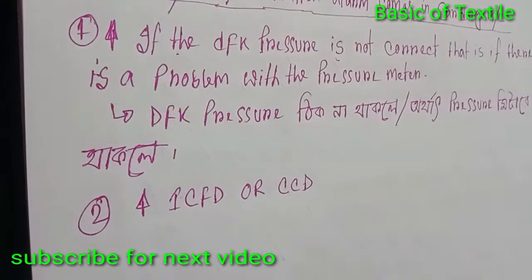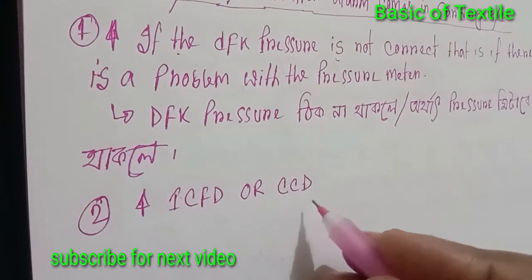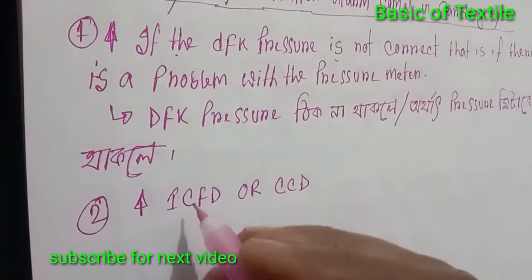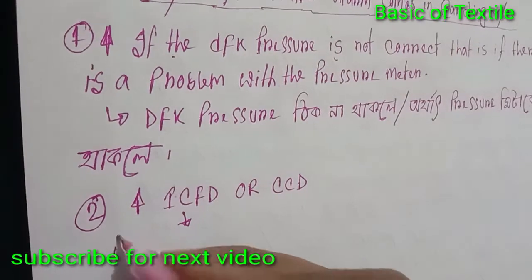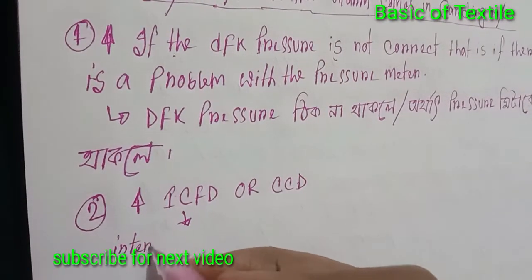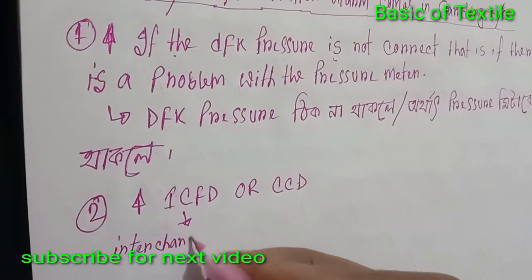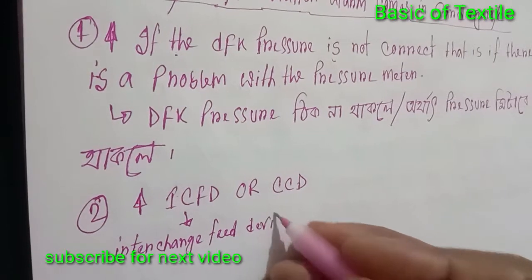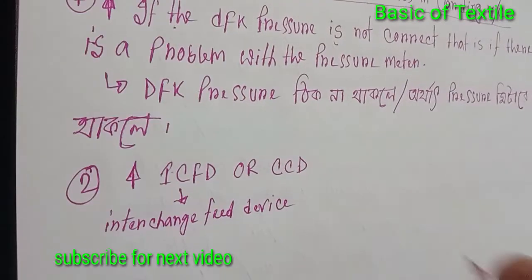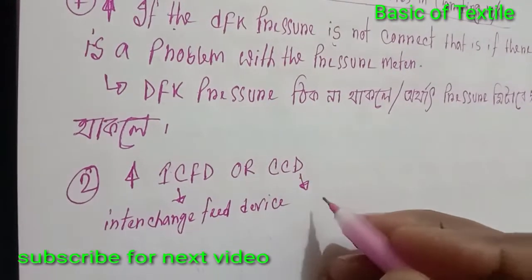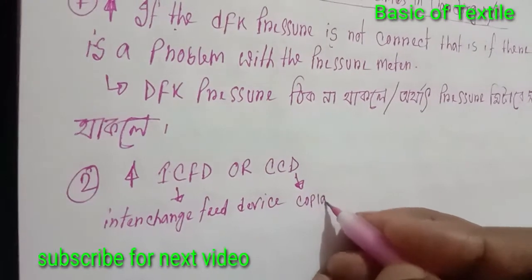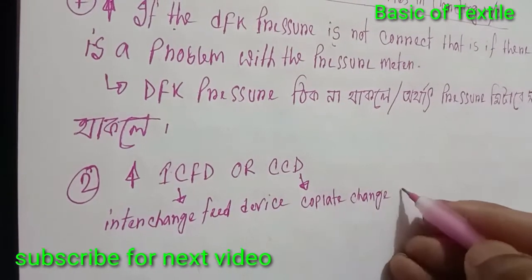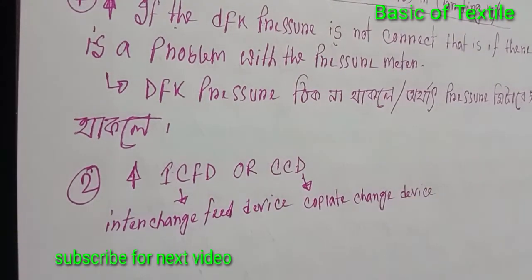CCD — the full meaning is chain interchange fit device, also known as cop plate chance device. This is the CCD full form.